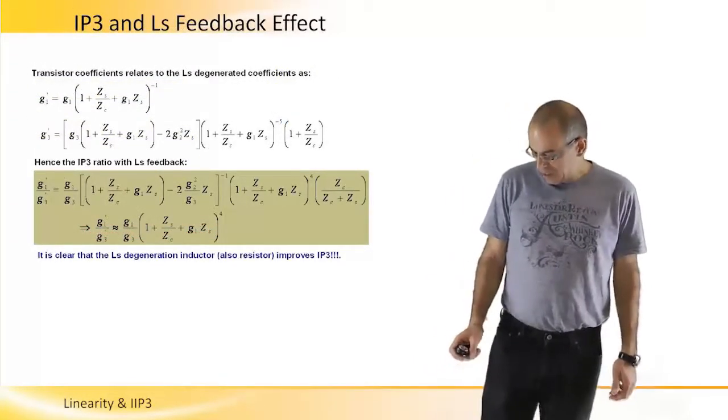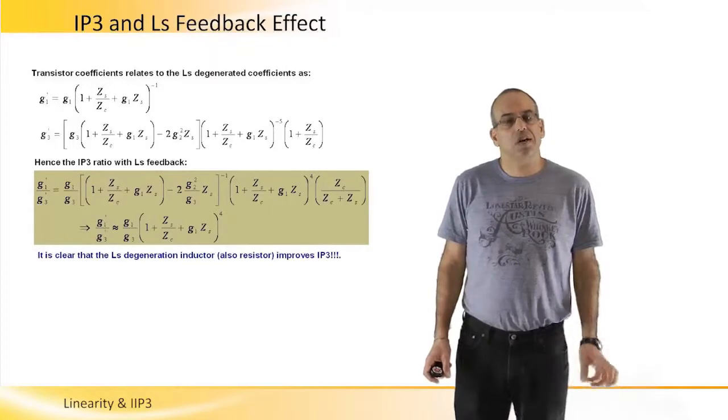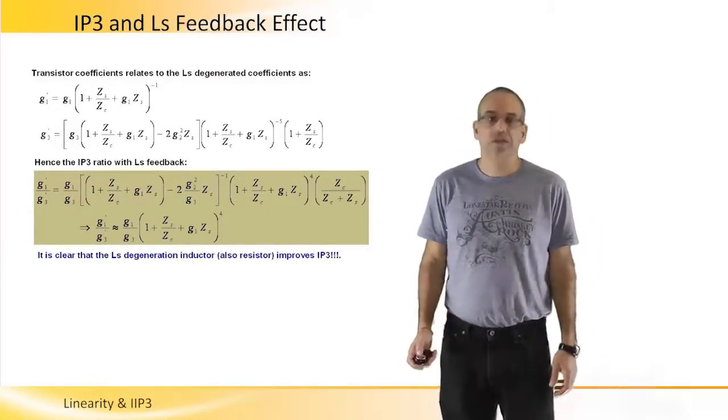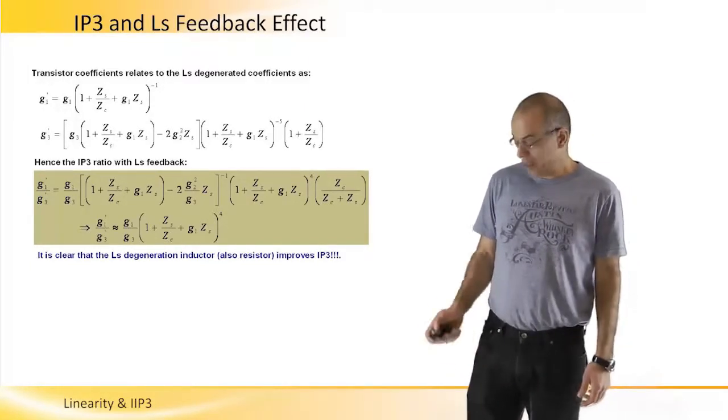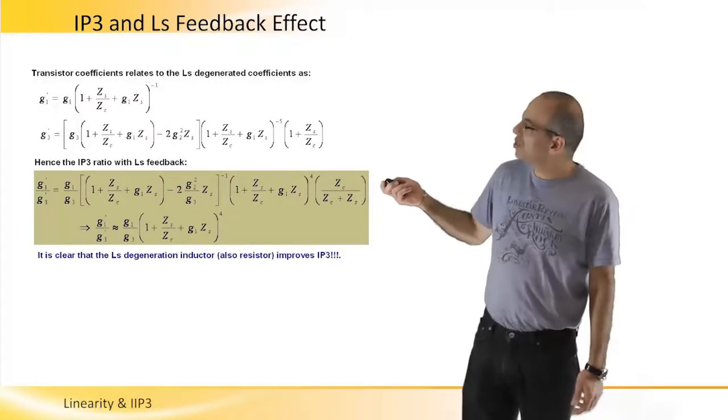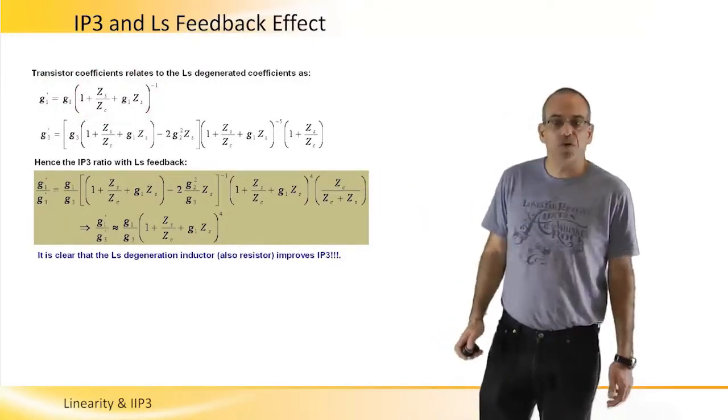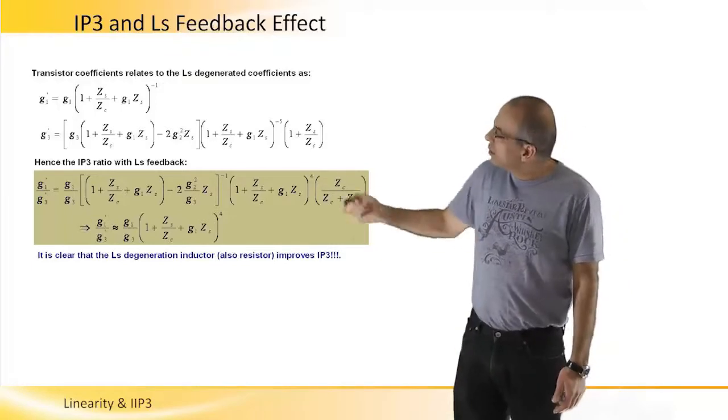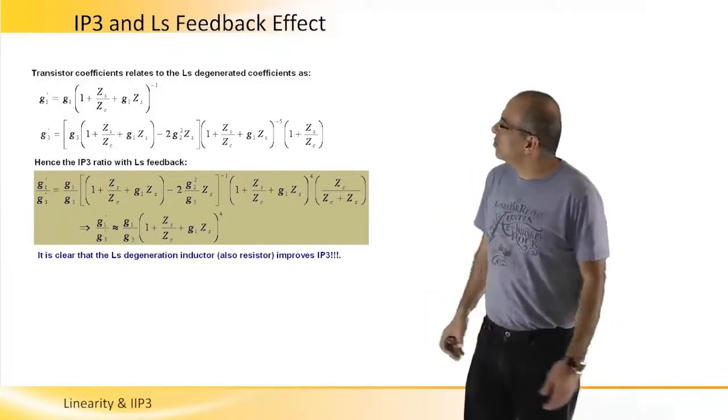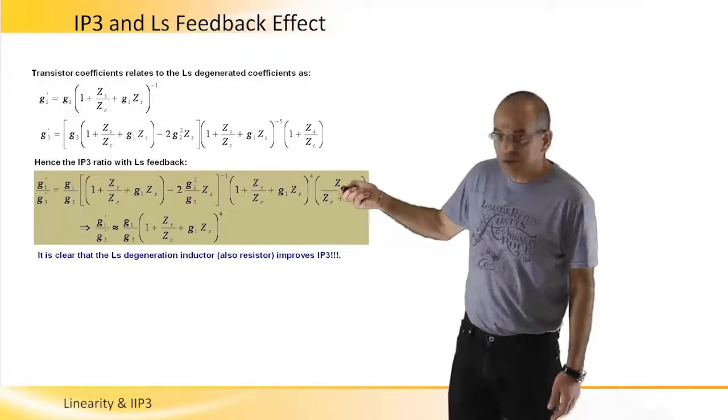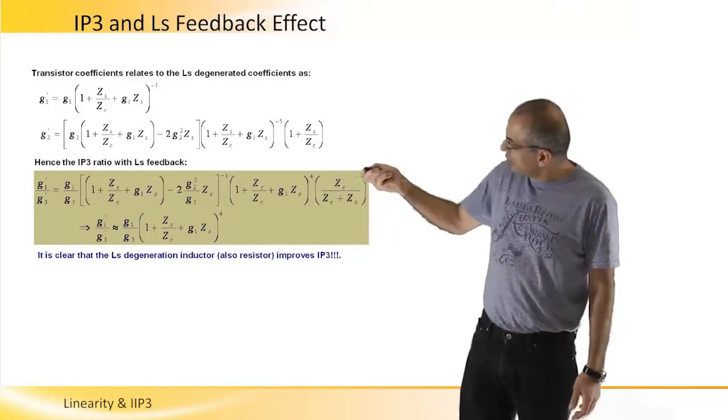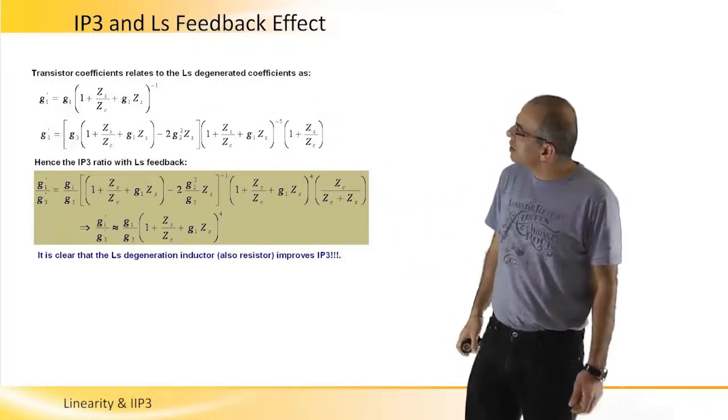And by equating ID currents for the same polynomial degrees, we can find some relationship between the GI and the GI tag coefficients to derive some conclusions about linearity. So we will now compare coefficients of the two ID description, nonlinear description of the drain current.